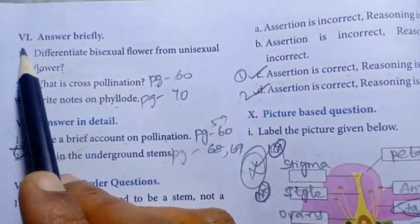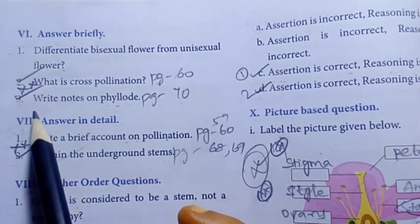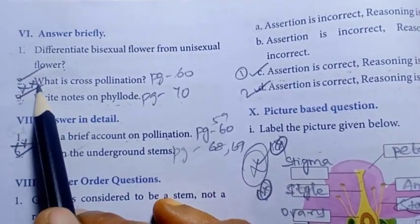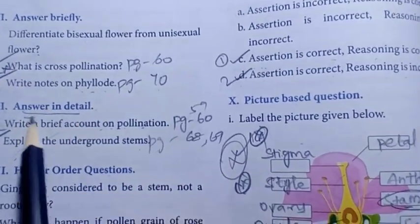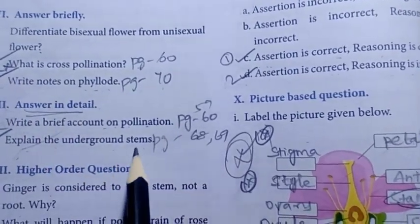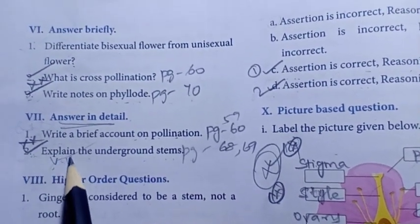Page number 72, answer briefly. Roman number six, answer briefly. Second one, what is cross pollination? Third one, write notes on phyllode. So second and third are important questions. Answer in detail: explain the underground stems. This is very important, repeated. Very very important detail, this one.